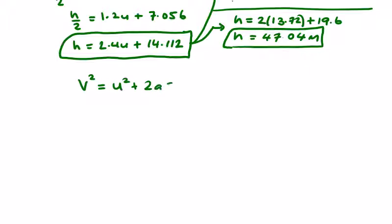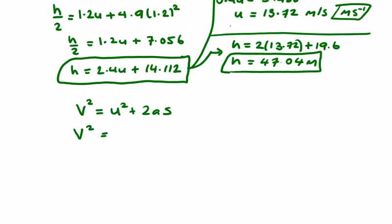So we have u, a, and s. v squared equals, for u, 13.72 squared, plus 2 by a which is 9.8, by the height which is 47.04.